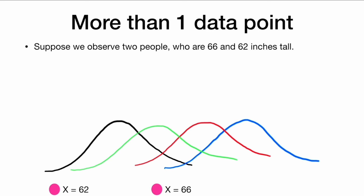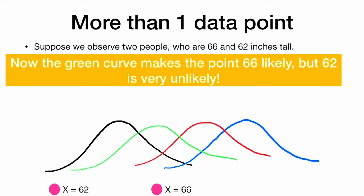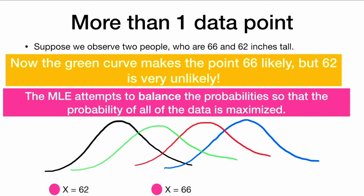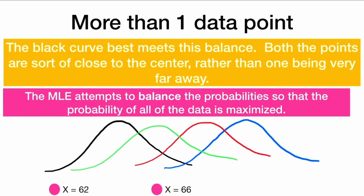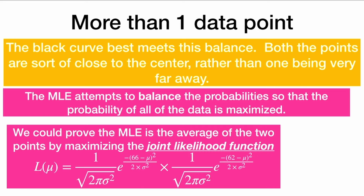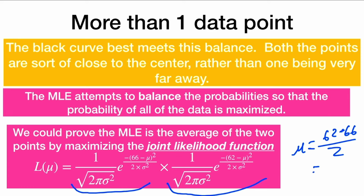Now let's suppose we have more than one data point. Suppose we observe two people who are 66 and 62 inches tall. The green curve makes 66 likely, but 62 is very unlikely with the green curve. What the MLE is going to do is attempt to balance the probabilities so that the probability of all the data is maximized. The black curve best meets this balance — both points are sort of close to the center of the black curve. We can prove the MLE is the average of the two points by maximizing the joint likelihood function: one likelihood multiplied by the other. The best possible mu is the average of 62 and 66, which is 64.